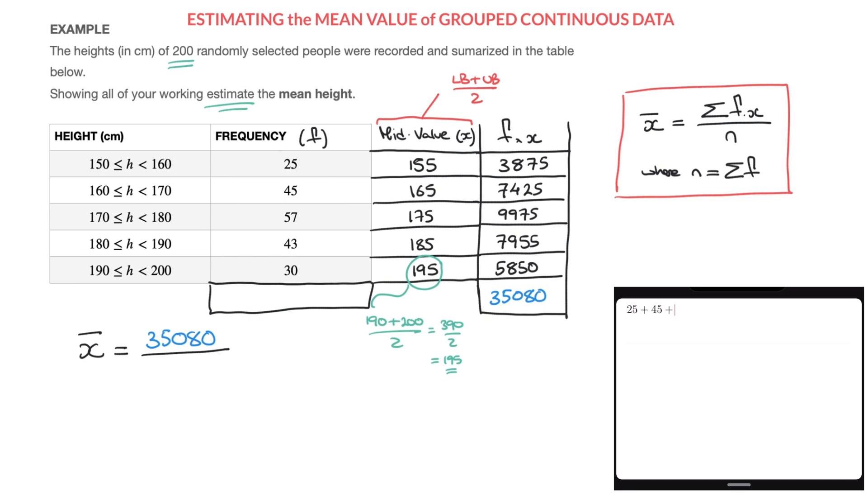Plus 43, plus 30. Done. And we can see quite clearly that the sum of all the frequencies is 200.